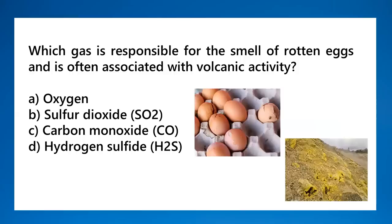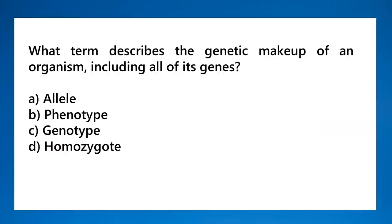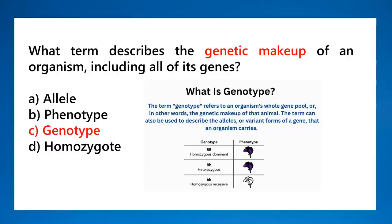Which gas is responsible for the smell of rotten eggs and is often associated with volcanic activity? That is hydrogen sulfide — the foul smell of rotten eggs is hydrogen sulfide, the same smell associated with volcanoes. What term describes the genetic makeup of an organism, including all of its genes? That is the genotype — it refers to an organism's entire gene pool or genetic makeup. The phenotype is the observable trait or characteristic.